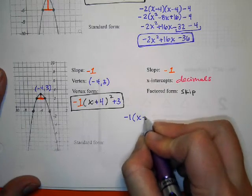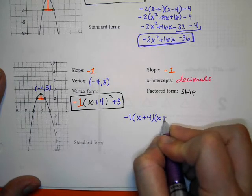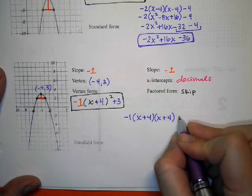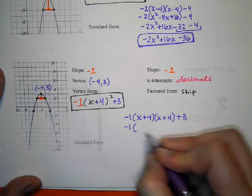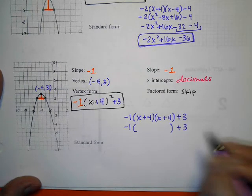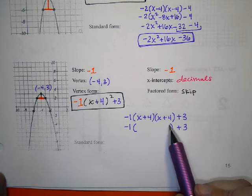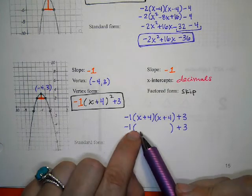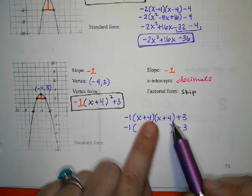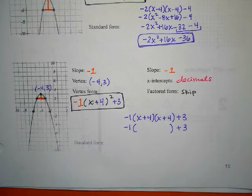So whenever there is no x-intercepts, don't build that form. Standard. x + 4 will be written twice, and it has a +3 at the end. Try and fill in just this center piece by multiplying, adding for the center, and multiplying for the end. Just try and fill that in, and then we'll check it.